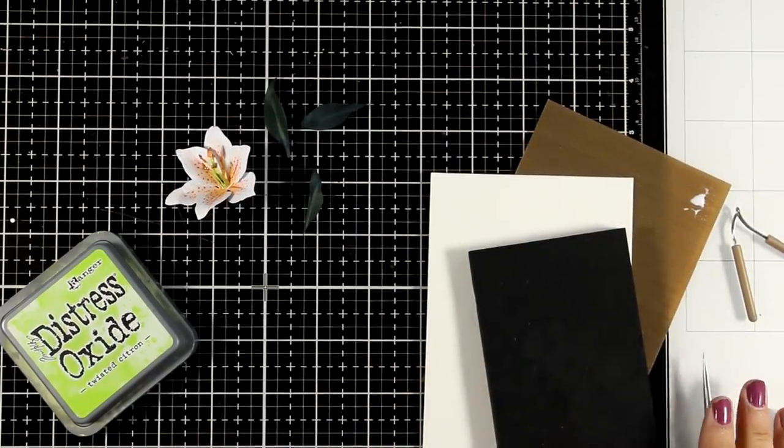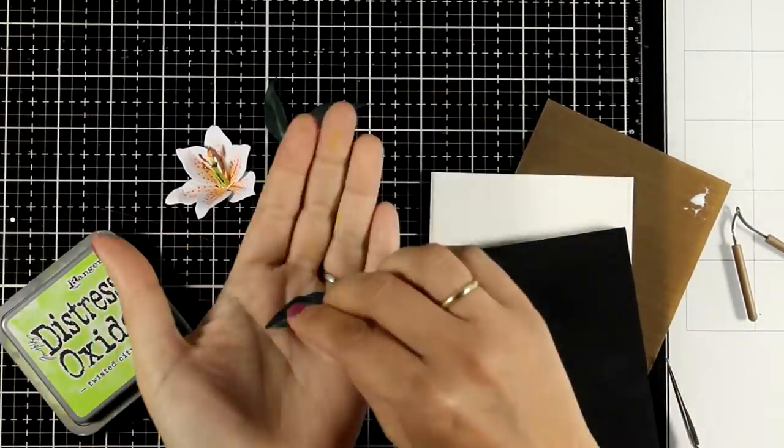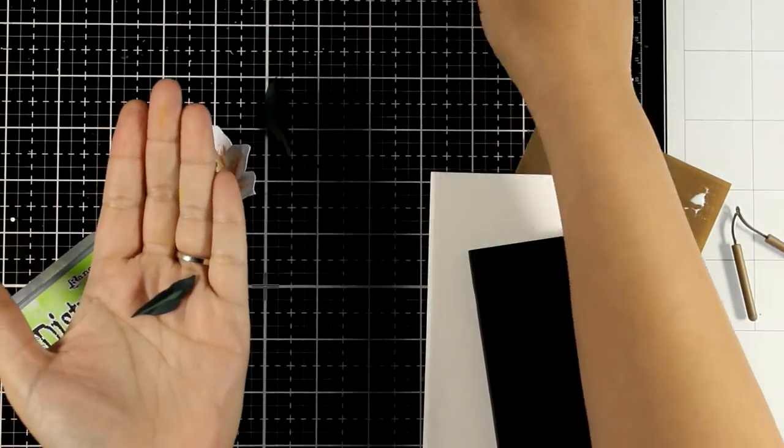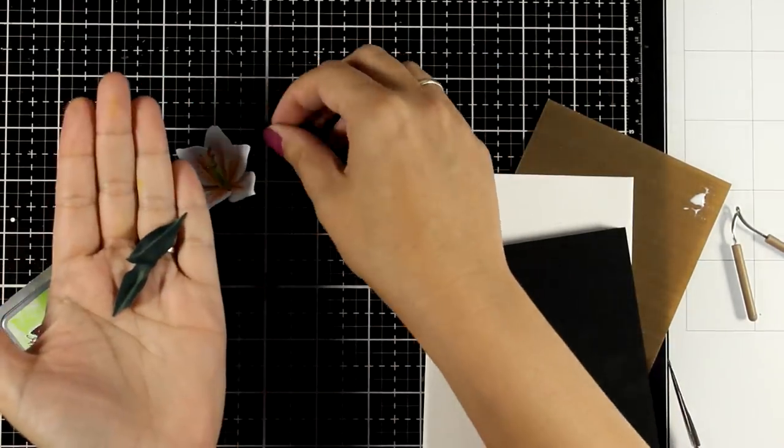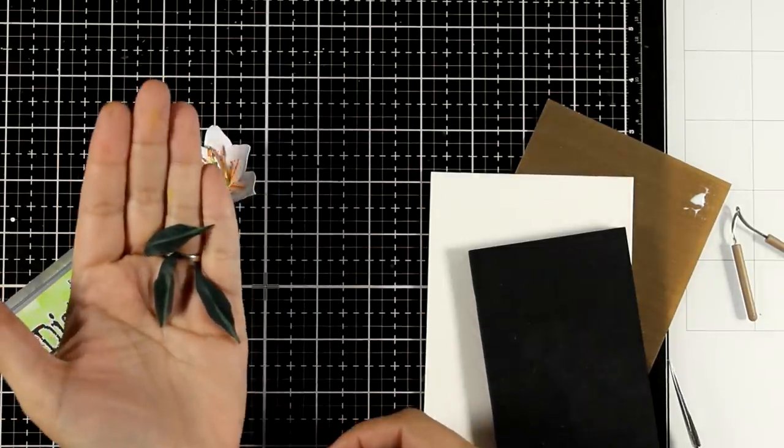Now, Susan in her videos is using pan pastels for that lighter green line at the center of the leaves. But if you have Distress Oxide ink, it does the same job.